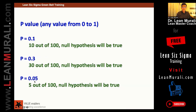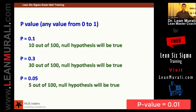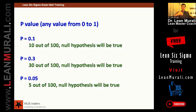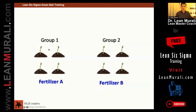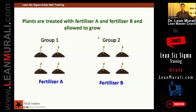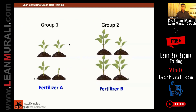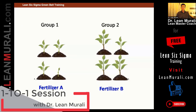Suppose if p-value is 0.01, it is very low — the null must go. Null must go means we reject the null. Coming back to the fertilizer example: we have fertilizer A and B, and the plants are treated with fertilizer A and fertilizer B and allowed to grow. You see in which fertilizer the plants have grown taller — fertilizer B is good.